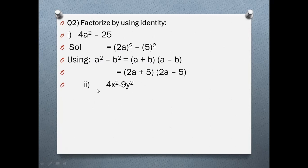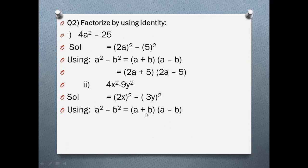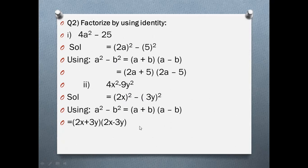Next part: 4x² − 9y². Again, two terms, both perfect squares, with a minus sign. 4x² = (2x)² and 9y² = (3y)². Using the formula a² − b² = (a + b)(a − b), we get (2x + 3y)(2x − 3y).